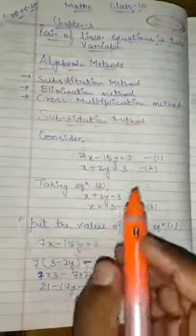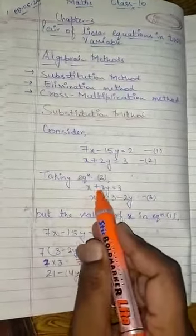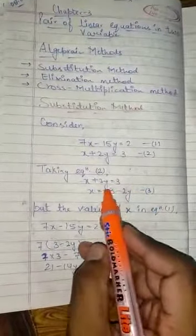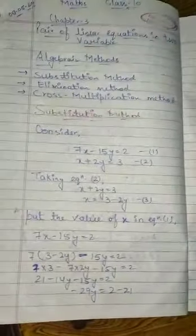Now we are taking plus 2y here and then taking it to the right hand side. Plus and minus, so here we have to get the value x equals 3 minus 2y. So we have equation number 3.